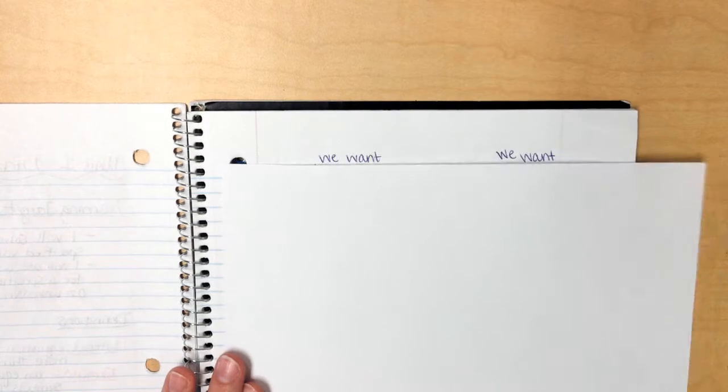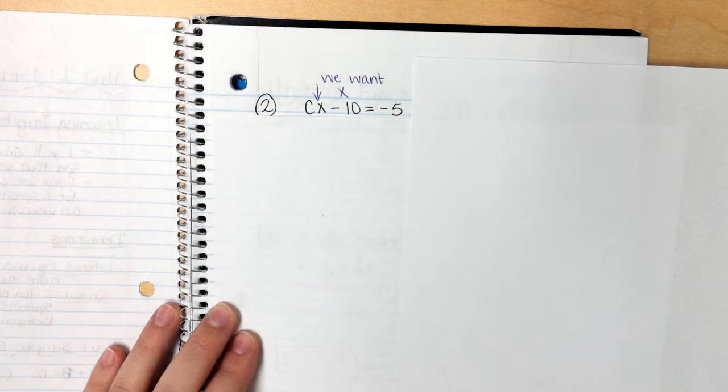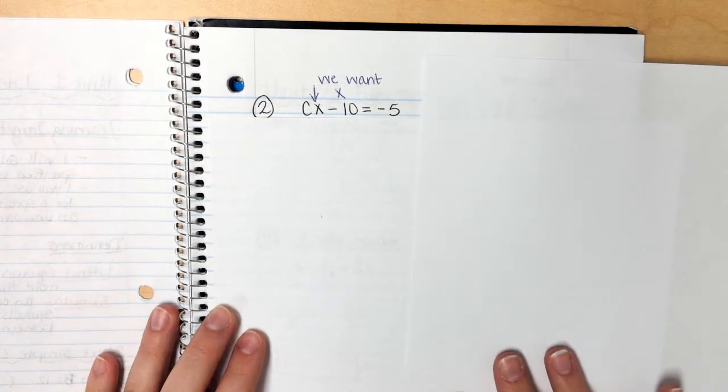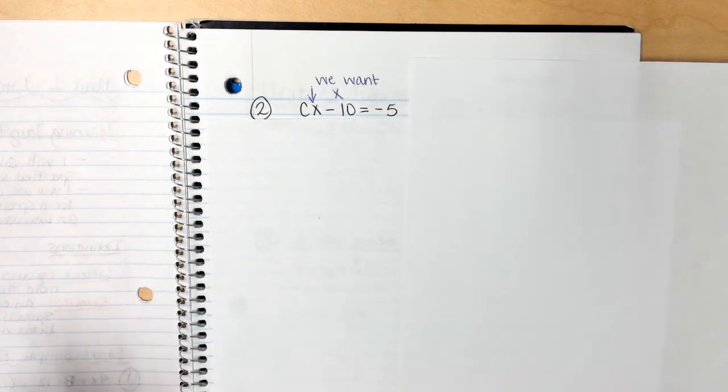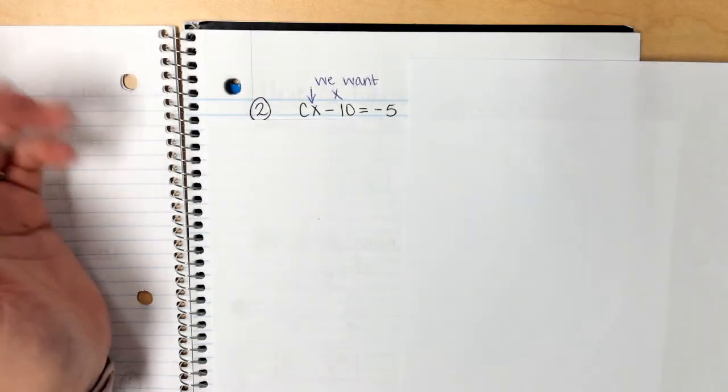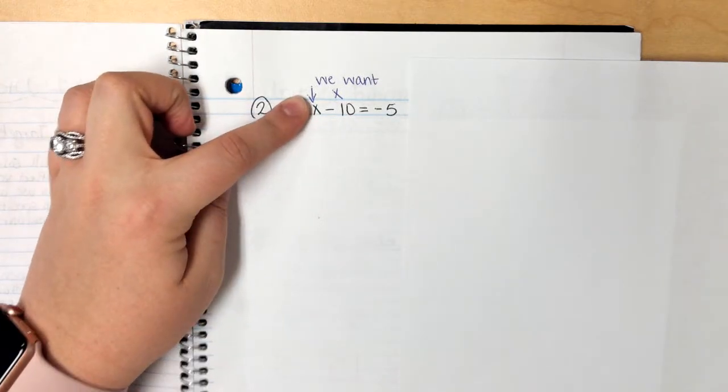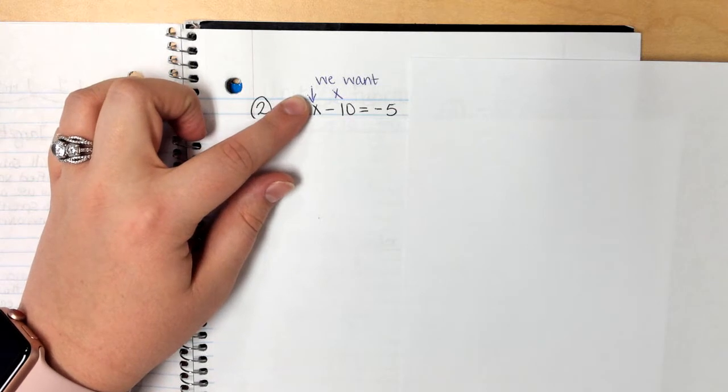Let's do a couple more examples to get a better feel of them. Plus, they're all just a little different. So let's talk about this guy right here. This does say cx minus 10 equals negative 5. But again, we're going to pretend like the c is not even there or pretend like the c is a 2 or whatever you want him to be. He's just a number. Don't let him freak you out.